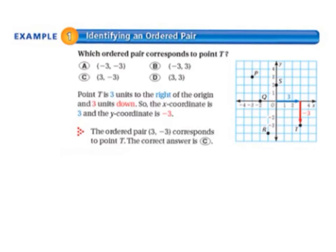Today we'll be starting on page 276 in your math textbook. Example 1, identifying an ordered pair. Which ordered pair corresponds to point T? So we need to find point T. It's right there. Point T is 3 units to the right of the origin and 3 units down. So the x-coordinate is 3 and the y-coordinate is negative 3. So the ordered pair is positive 3, negative 3. That corresponds to point T. The correct answer is C.